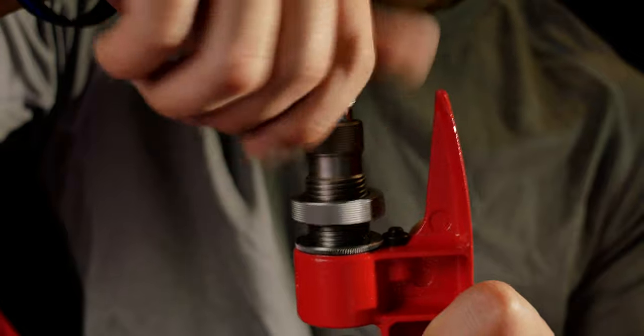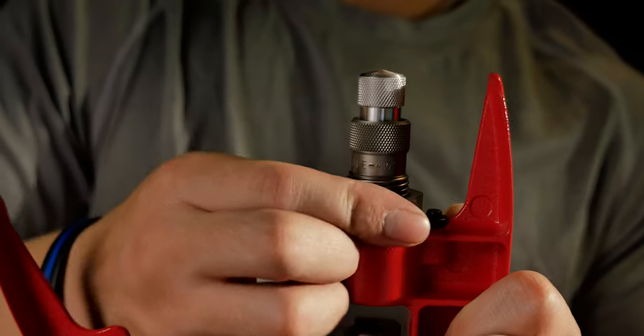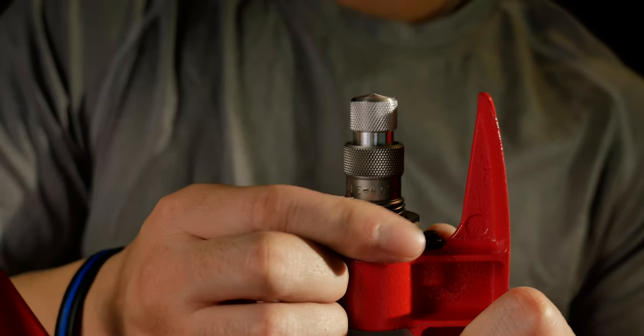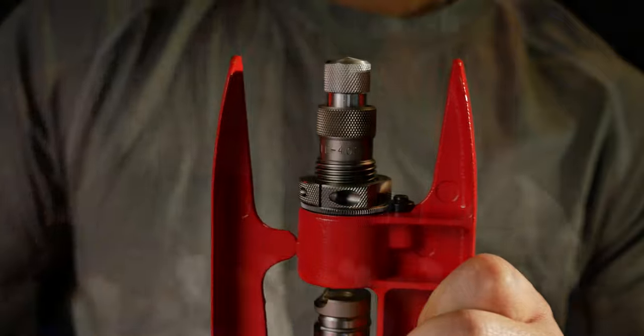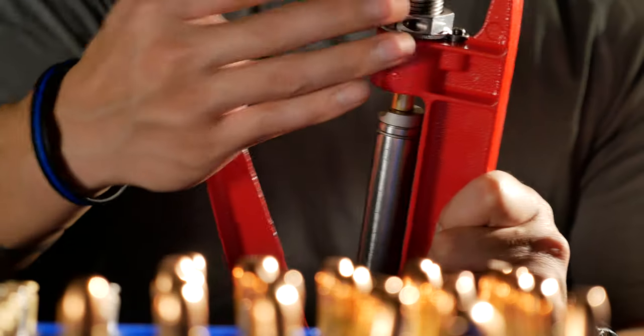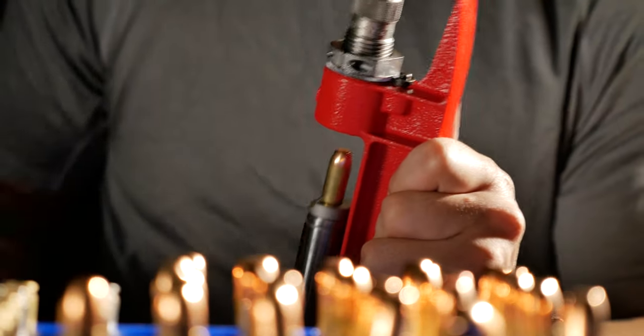And the last step is to seat and crimp. The seating and crimping is done in one step using the Lee seating die.